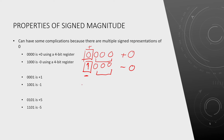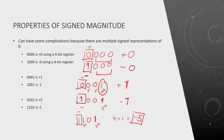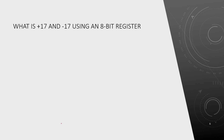Here is an example using a 4-bit register. For 0001, the sign bit is 0 (positive), and we have 2^0 = 1, so this is positive 1. For 1001, the sign bit is 1 (negative) and we still have 2^0 = 1, so this is negative 1. For 1101, the sign bit is 1 (negative), we have 2^2 + 2^0 = 4 + 1 = 5, so this is negative 5. The same values with a sign bit of 0 would simply be positive.